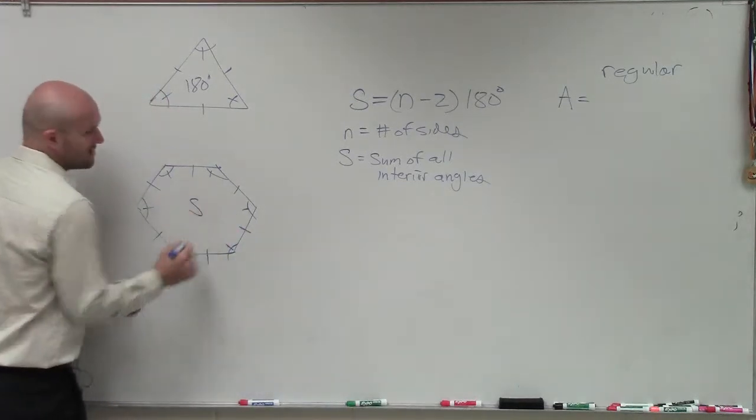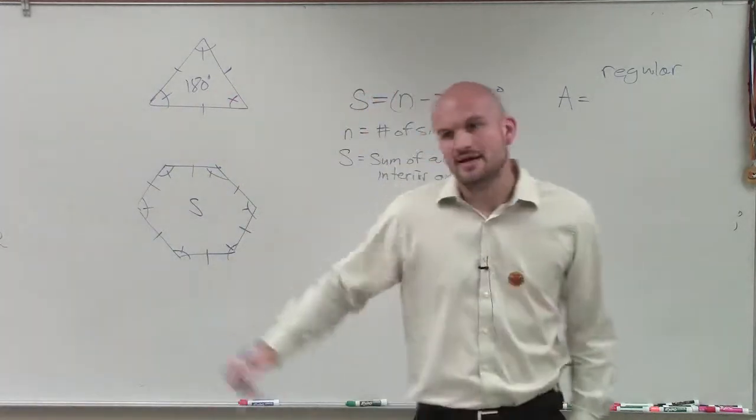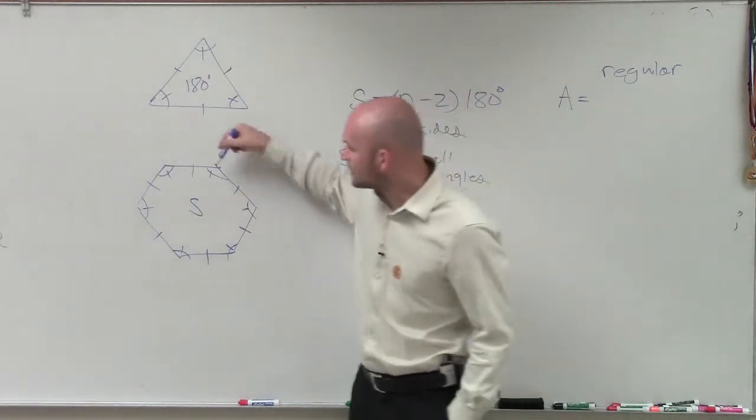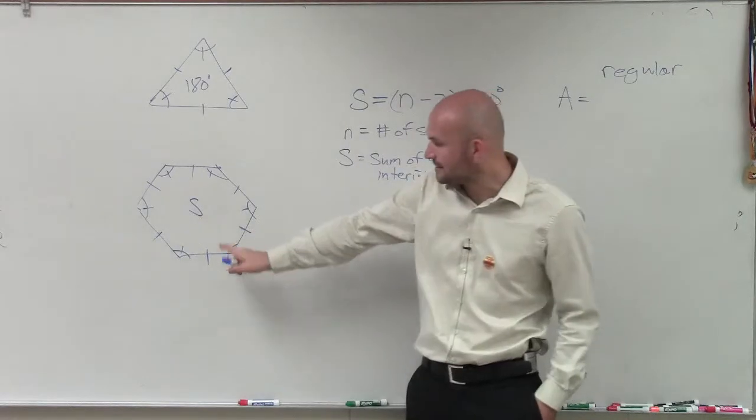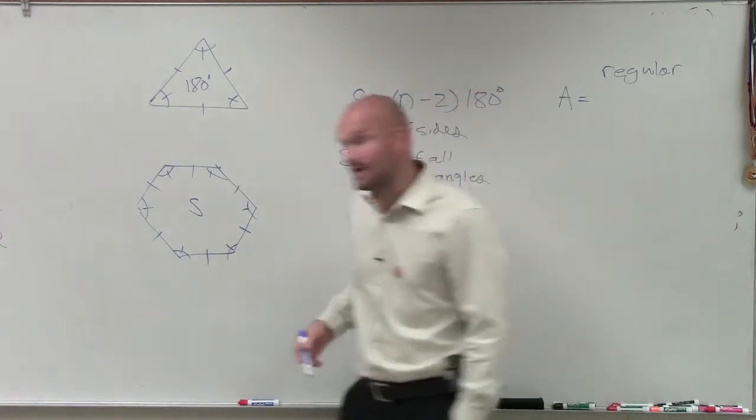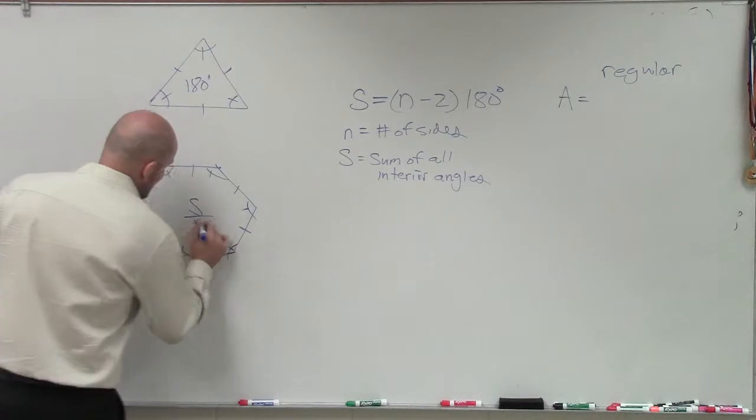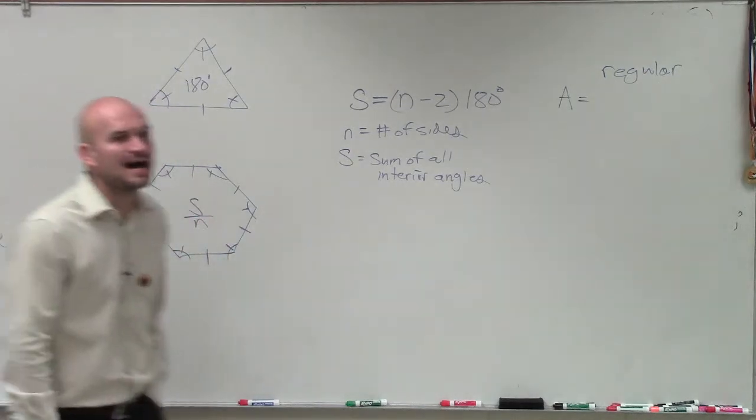So what about if I said, if this sum is, and we could figure out the sum, but who cares what it is? If I said, here's the sum, and I wanted to figure out what these angles were, what do I have to divide it by? If I want to find out just one angle, what I have to divide it by? Six, right? So guess what? You take the sum and divide it by n.